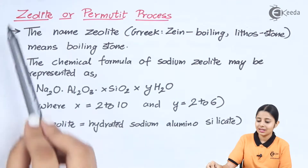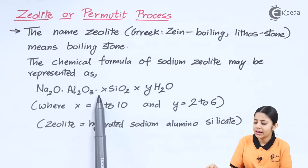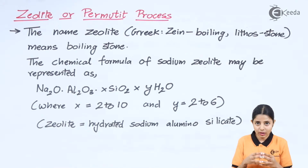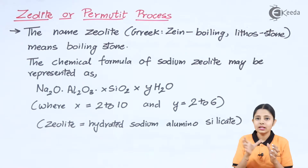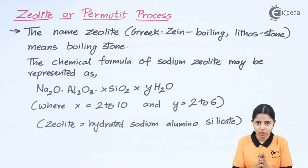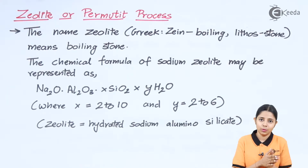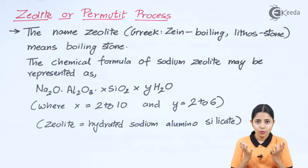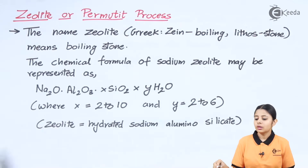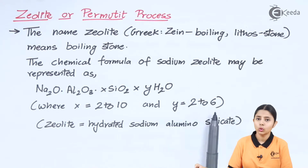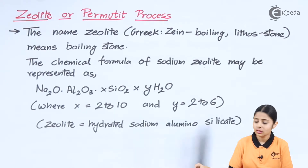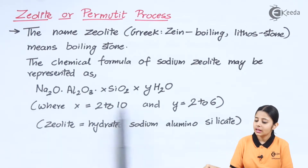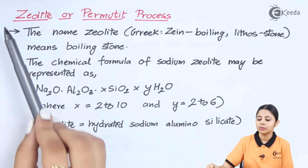This entire formula represents zeolite or permutite. The reason we have XSiO2·YH2O is that the zeolite is added into impure water and reacts with all the impurities present, converting soluble impurities into insoluble ones that can be easily filtered out, making hard water into soft water. X and Y are variable — depending on the amount of water and impurities, X ranges from 2 to 10 and Y from 2 to 6. If X exceeds 10 or Y exceeds 6, the formula no longer represents a zeolite or permutite.